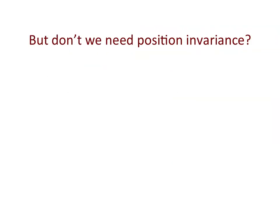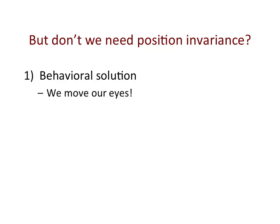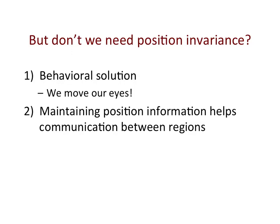But don't we need position invariance to be able to do object recognition easily? Actually, there are two things to consider. First, we have a behavioral solution to the problem of things appearing in different locations in the visual field — we move our eyes. Object recognition is largely a function of the fovea, and so we move our eyes to objects that we want to identify. Secondly, if we still have position information even at later stages of the visual pathway, this is going to help communication between regions by providing a common language, if they all maintain position information.